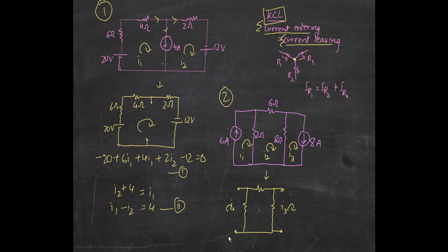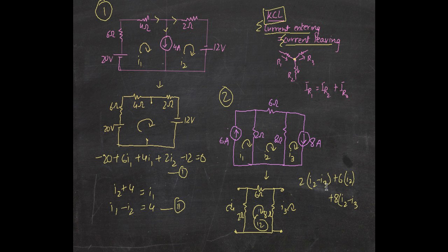The first step is we remove the current sources and do an open circuit. Then we apply Kirchhoff's voltage law across the two-ohm, six-ohm, and eight-ohm resistors. The current in this loop is I₂, so we get: two(I₂ − I₁) plus six I₂ plus eight(I₂ − I₃) equals zero. This is the first equation, and the sum of voltages equals zero.